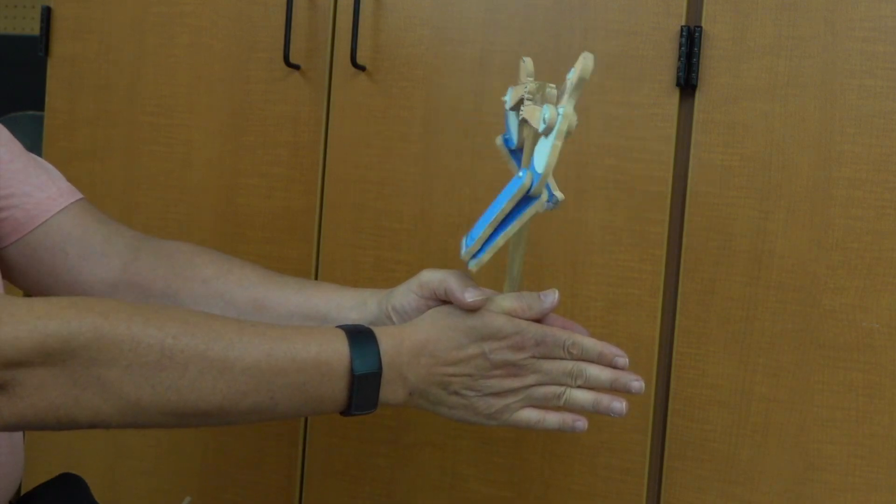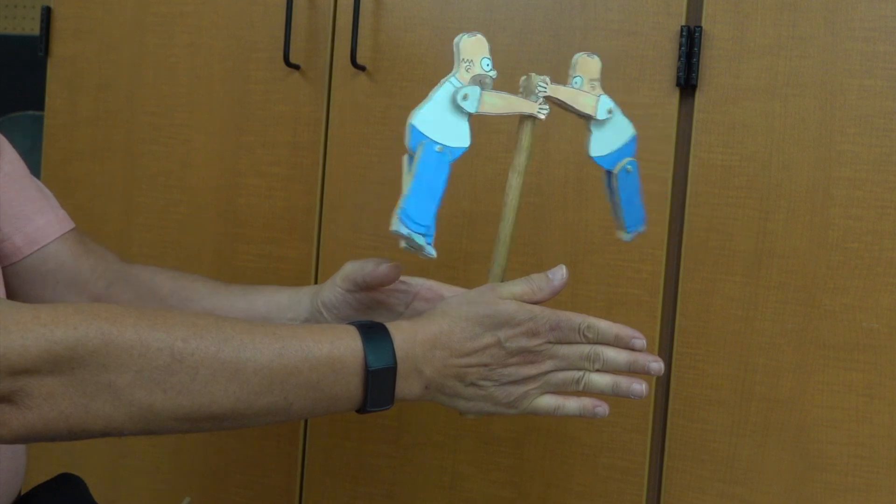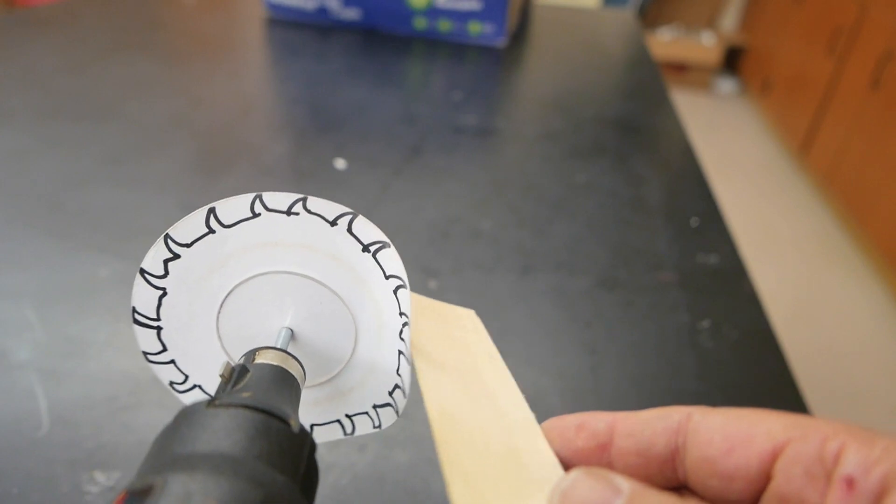The same thing happens to Homer Simpson as he rotates around the vertical bar. A few years ago I demonstrated a saw blade that was made out of paper.